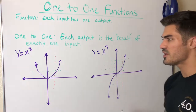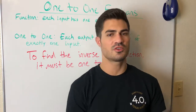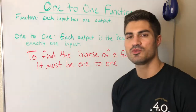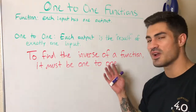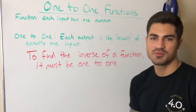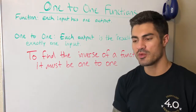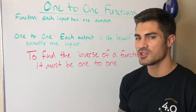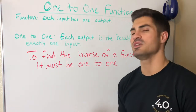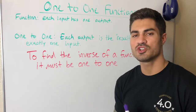So why do we care whether a function is one-to-one? Because in order to find the inverse of a function, it must be one-to-one. Before we can find an inverse, we have to confirm the function is one-to-one. There is only one exception: when we restrict the domain to make the function one-to-one.